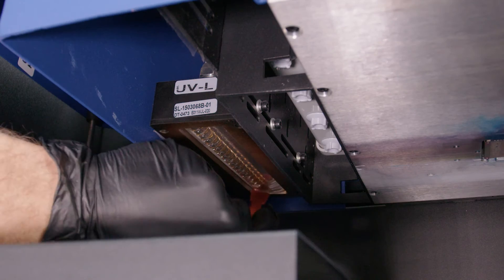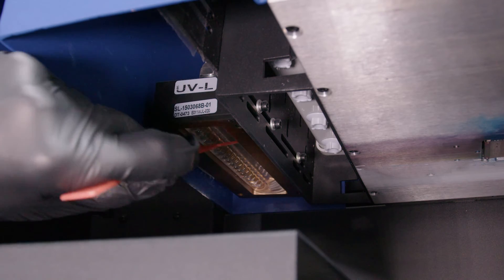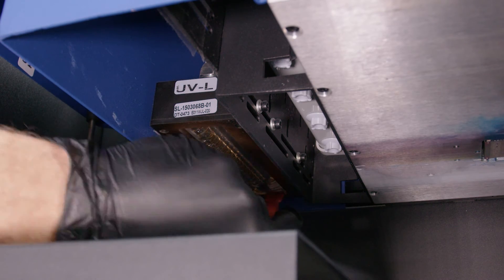Use a scraper or similar tool to remove any ink that has hardened on any of the UV lamps.